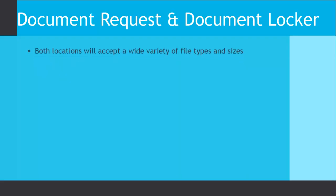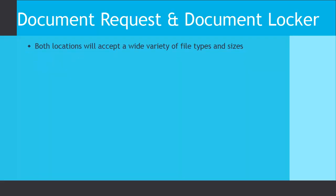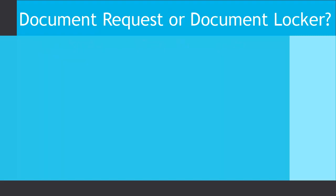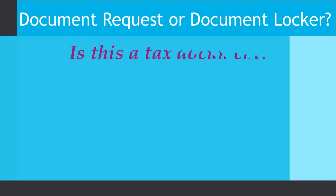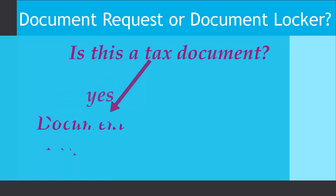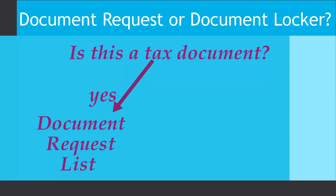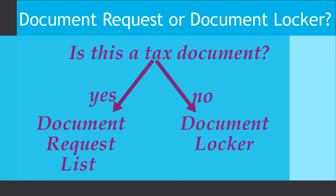Let's summarize. Both the Document Request List and the Document Locker in your Collaboration Hub are locations you can securely upload files, but that's where the similarities end. Do you upload files to your Document Request List, or to your Document Locker? The simple way to determine which location to upload a file is to ask yourself: is this a tax document? If the answer is yes, then you will want to upload the file to the Document Request List. If the answer is no, you will want to upload the file to the Document Locker.